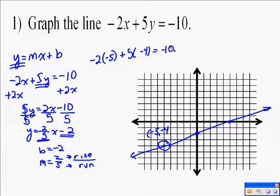So negative 2 times negative 5 is a positive 10. 5 times negative 4 is a negative 20. 10 plus negative 20 does equal negative 10. So the point negative 5, negative 4 made this equation true, and thus that line is a graph of my equation.